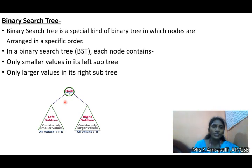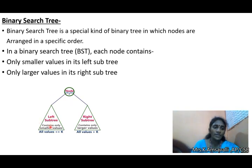In a binary search tree, each node contains only smaller values in its left subtree and greater values in its right subtree. The left subtree contains only smaller values and the right subtree contains only larger values.